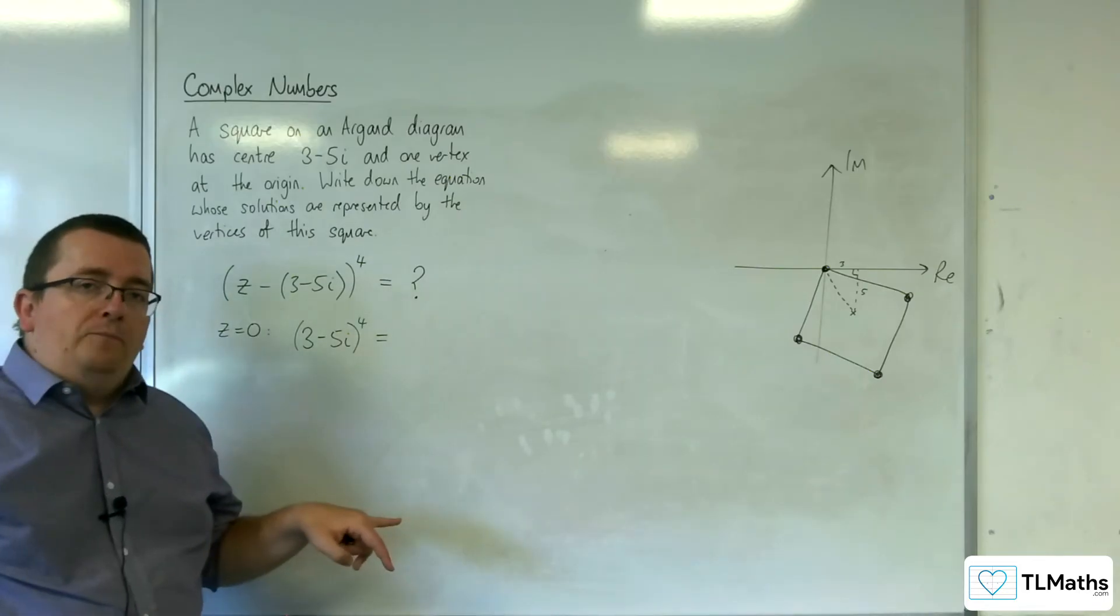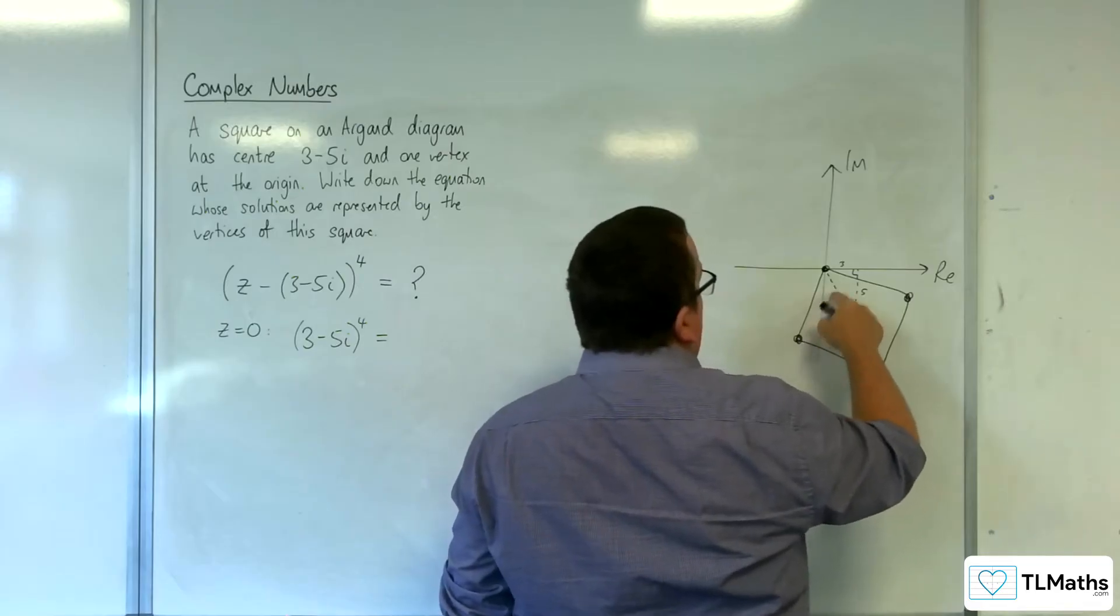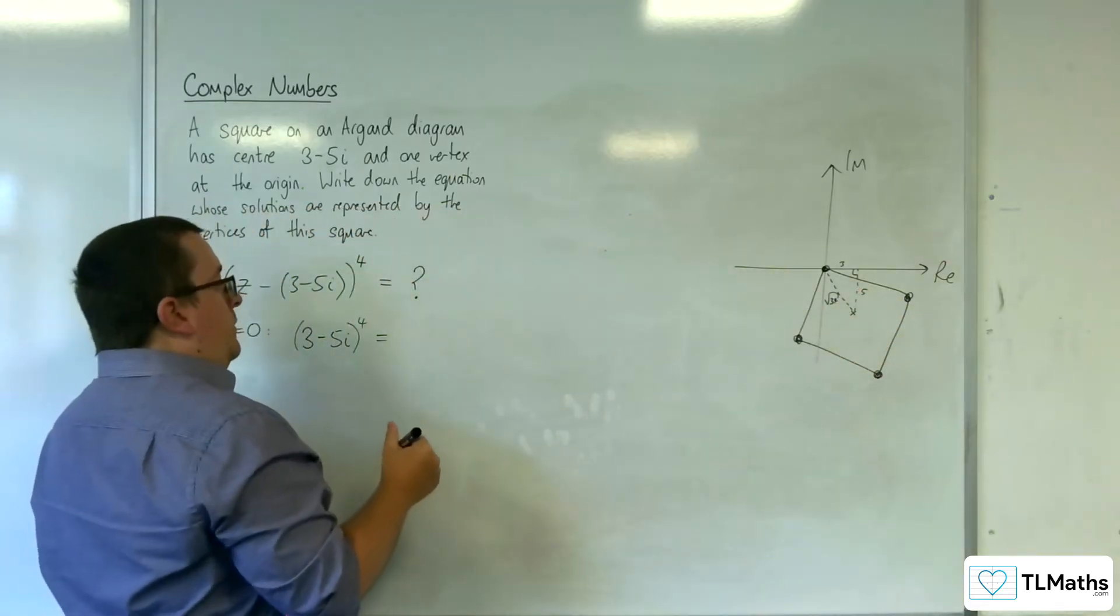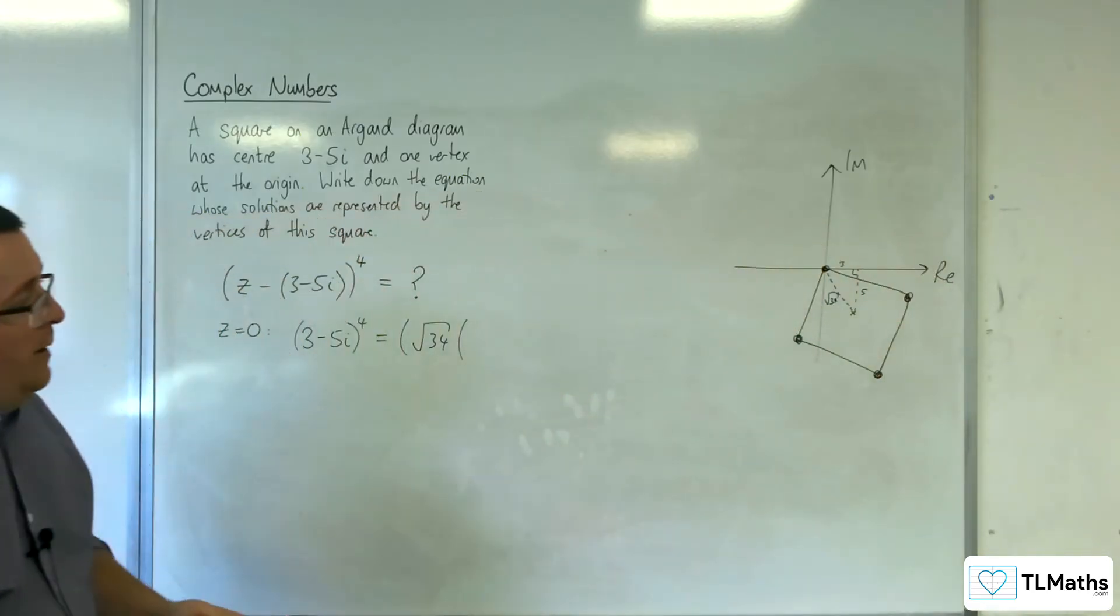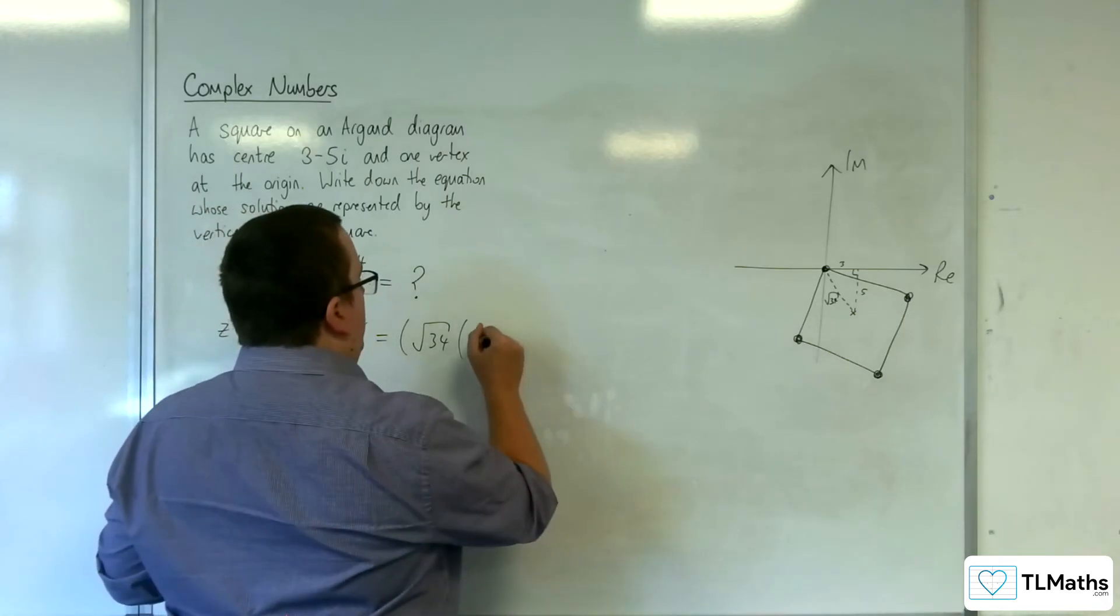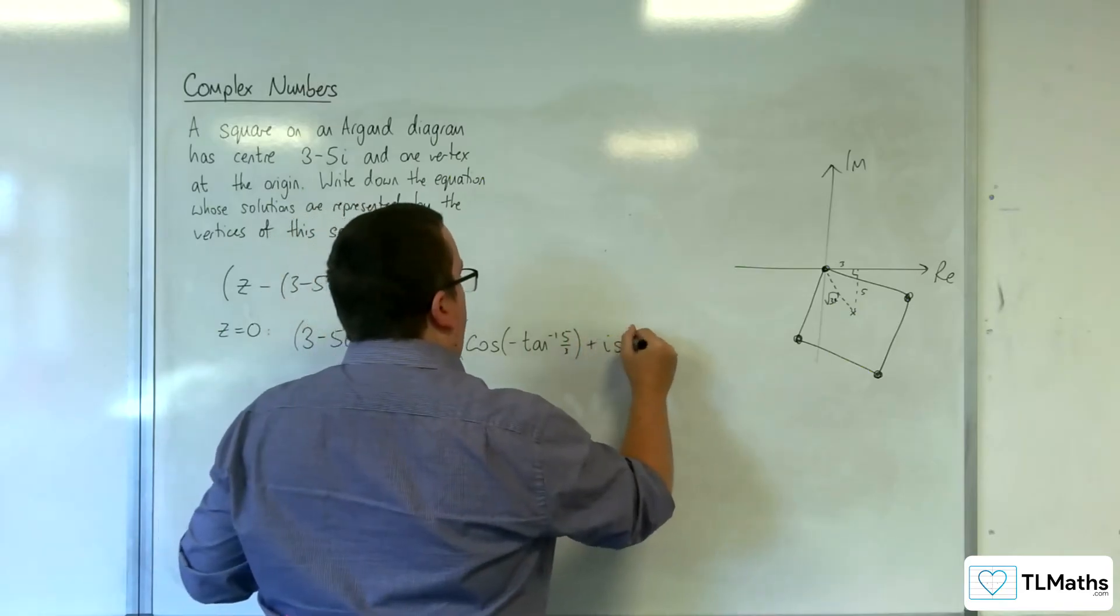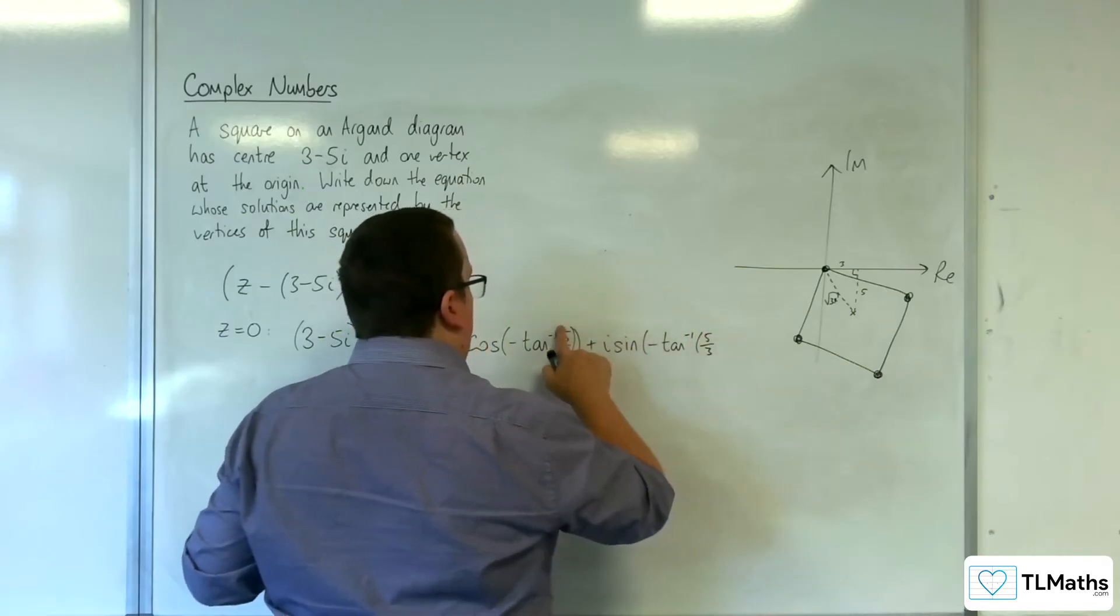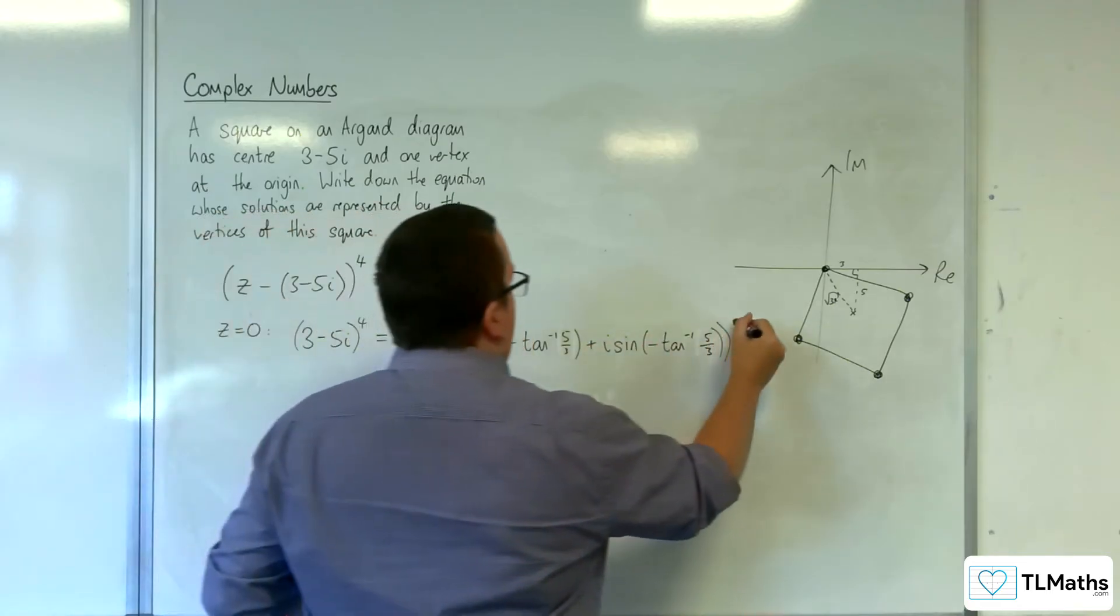So I'm going to use modulus argument form to get there. I know that I can work out the modulus by doing the square root of 3^2 + 5^2, so √34, 9 + 25. So I know then that I've got √34 times, now the argument will be the negative of the inverse tan of 5/3. So we're going to have cos(-tan^(-1)(5/3)) + i·sin(-tan^(-1)(5/3)), and that's to the power of 4.